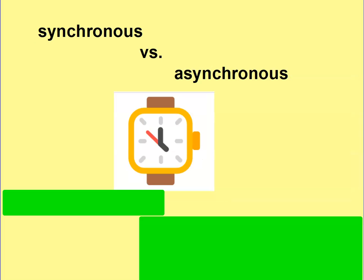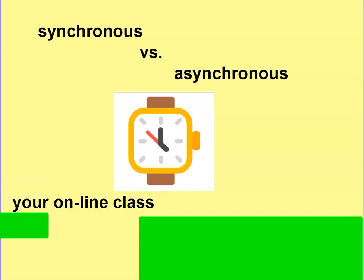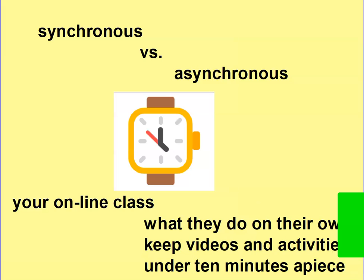We need to talk about synchronous versus asynchronous learning. Synchronous is your online class — you sitting in front of the camera talking to students in real time. Asynchronous is all the stuff you give them to do on their own. It's really important, especially for the asynchronous class, that you keep all your videos and activities under 10 minutes apiece so that your kids know to get up and stretch in between activities. They just can't concentrate in front of the computer for long periods of time.